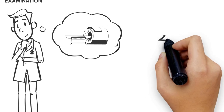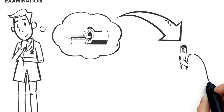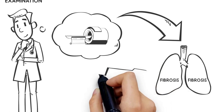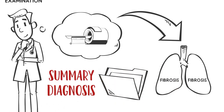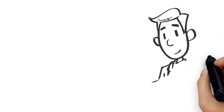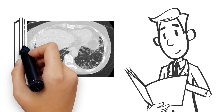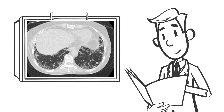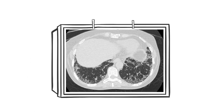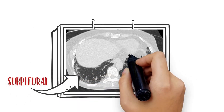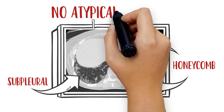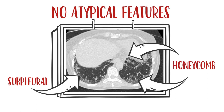On high-resolution CT scan, we are looking for the pattern of lung fibrosis, which will help us to potentially arrive at a summary diagnosis. Specifically, in idiopathic pulmonary fibrosis, we are looking for a pattern of usual interstitial pneumonia, which is defined by basilar predominant, subpleural, reticular opacities, and honeycombing without features that would argue against an underlying UIP pattern.